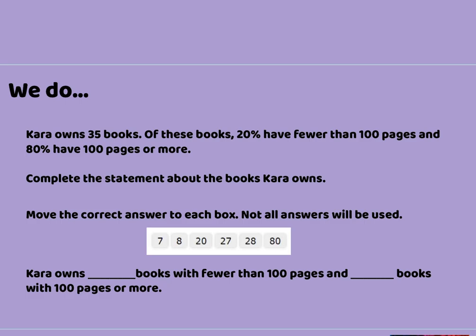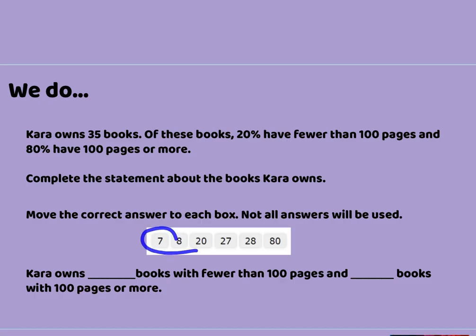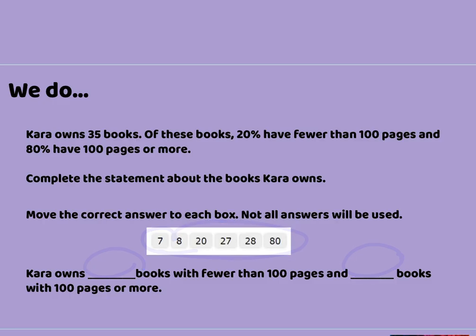It says Kara owns 35 books. Of these books, 20% have fewer than a hundred pages and 80% have a hundred pages or more. So it says complete the statement about the books Kara owns. We're going to move these numbers onto the blanks, and we only need two of them.